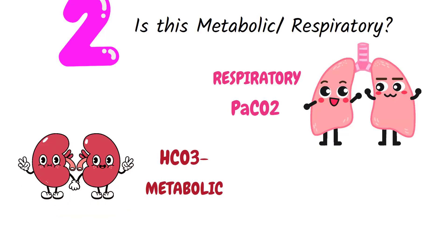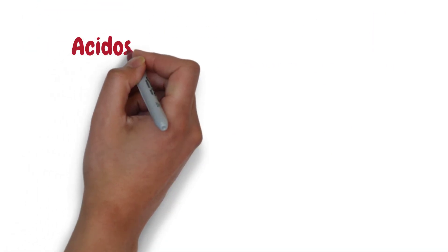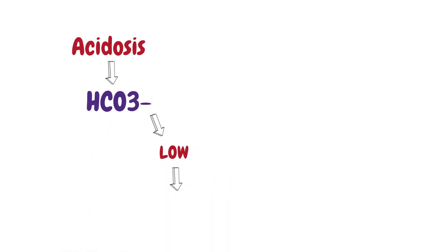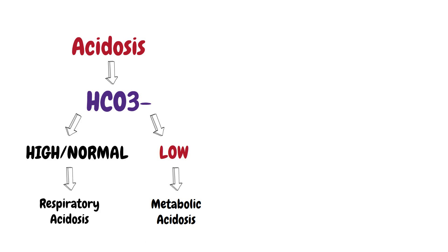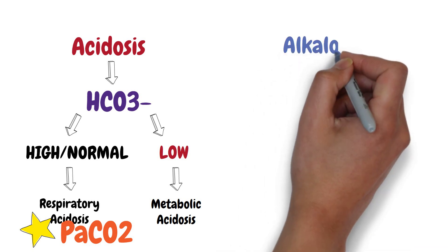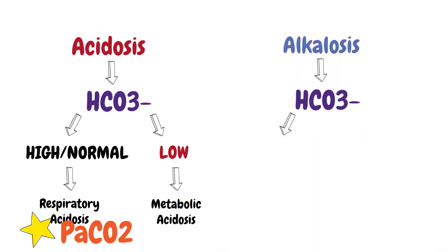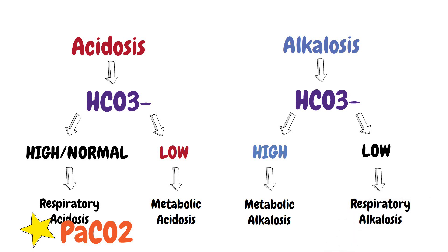Step number two is to look at the bicarbonate level. In an acidosis patient, if the bicarbonate is low, it's a metabolic acidosis. If not, it's a respiratory acidosis — you can confirm a respiratory acidosis by a high PaCO2 level in the ABG. In an alkalotic patient, if the bicarbonate is high, it's a metabolic alkalosis. If not, it's a respiratory alkalosis — you can confirm this by a low PaCO2 level.